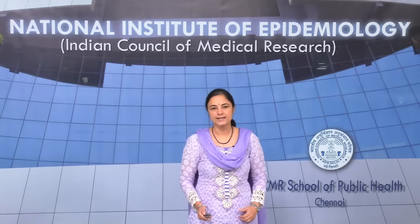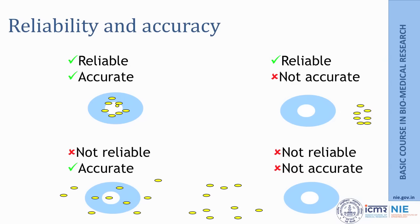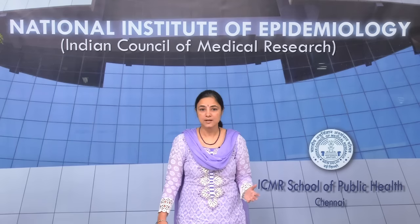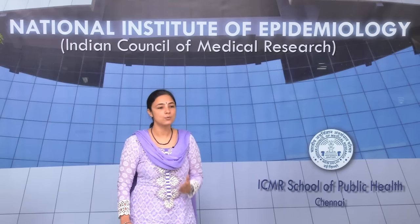Accuracy refers to the ability of a measurement to be correct. It could happen that both attributes may not occur at the same time, or they may. For example, your study might give you reliable and accurate results — this is the ideal case scenario. The worst case is that your measurement is neither reliable nor accurate. There are other scenarios: your measurement may be reliable but not accurate, or you may get an accurate result that cannot be repeated.